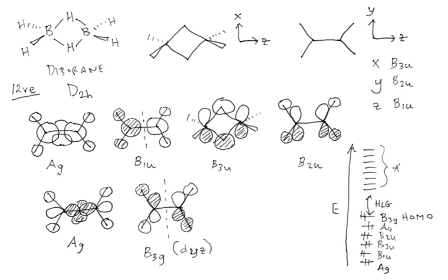The lowest two molecular orbitals have a lot of boron 2S character, which lies much lower in energy than the boron 2P orbitals upon which the higher orbitals are based. The B3G orbital is the HOMO because it has an anti-bonding node between the two boron atoms, making it the highest among the bonding orbitals once we account for the inherent energy of the boron 2S versus 2P valence atomic orbitals. That's a way to derive the bonding molecular orbitals for di-borane.